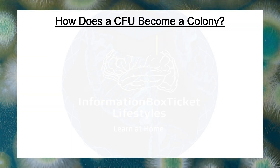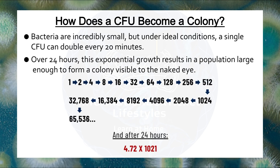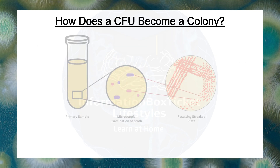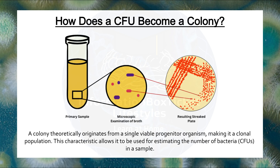How does a CFU become a colony? Bacteria are incredibly small, but under ideal conditions, a single CFU can double every 20 minutes. Over 24 hours, this exponential growth results in a population large enough to form a colony visible to the naked eye. We start with a sample containing bacteria. After plating this sample on agar, individual bacterial cells grow into distinct colonies. Each colony represents the descendants of one CFU, forming a pure culture. This purity is vital for laboratory work, as it ensures we study and characterize a single organism at a time.